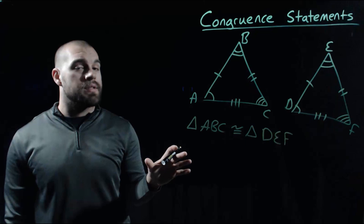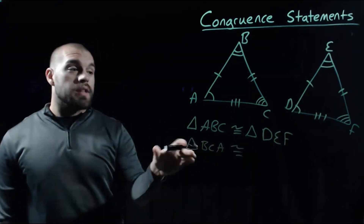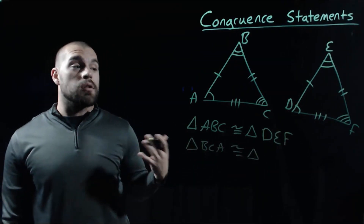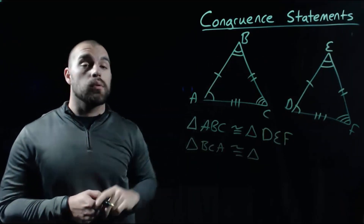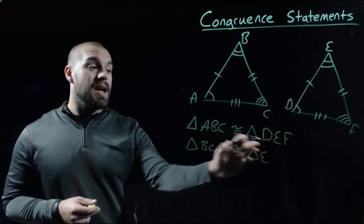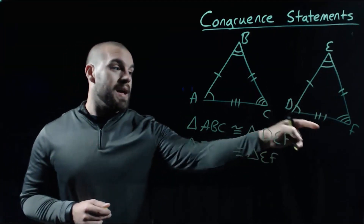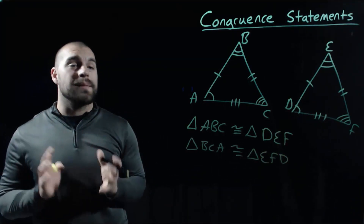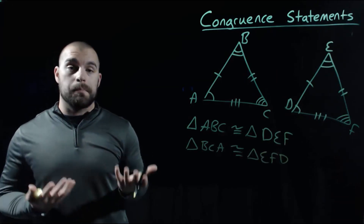But this isn't the only congruent statement we can write — we can change the order. So let's say we called that first triangle BCA. Since we started with angle B, and B is congruent to angle E, we start with E. C came next, so F is its corresponding piece, and then our last one was A, so we end with D. The way we write the congruent statement doesn't really matter as long as we match up the corresponding or congruent pieces along the way.